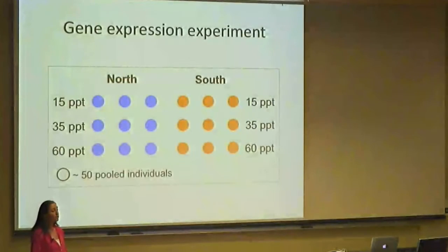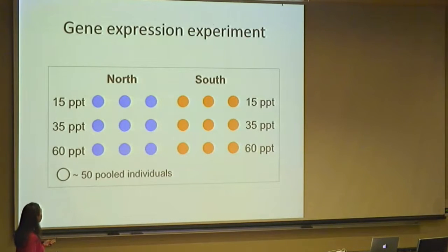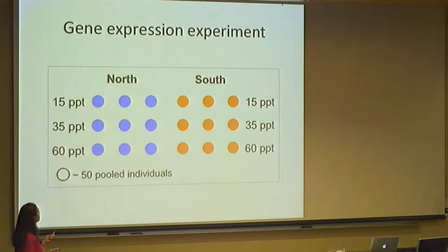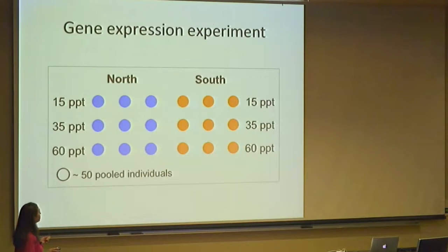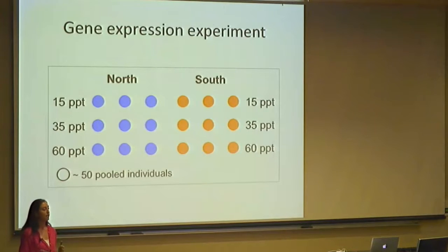For gene expression, each one of these circles represents a replicate, and within each circle I pooled 50 copepod individuals. The blue circles represent northern populations and the orange represents the south, with three different salinity treatments. I put the copepods into their treatment, waited an hour, then flash froze them in liquid nitrogen and extracted all of the RNA so I could see how gene expression was changing depending on the treatment.